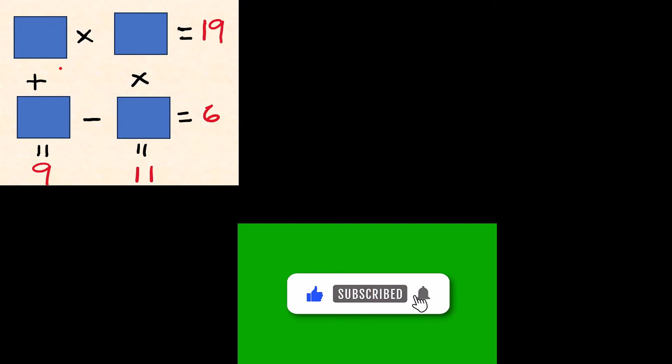So first thing to do here is label the boxes. So let's call this side a, and this b, c, and d. Alright, so a times b, so ab is 19. So that's the first equation.